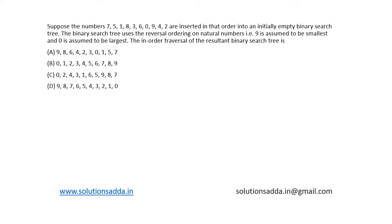This is a question from algorithms. Suppose the numbers 7, 5, 1, 8, 3, 6, 0, 9, 4, 2 are inserted in that order into an initially empty binary search tree. The binary search tree uses the reversal ordering of the natural numbers, that is, 9 is assumed to be the smallest and 0 is assumed to be the largest.